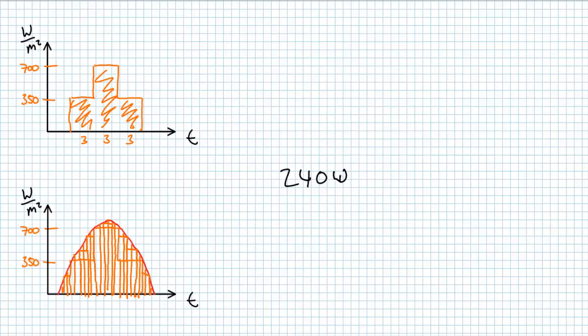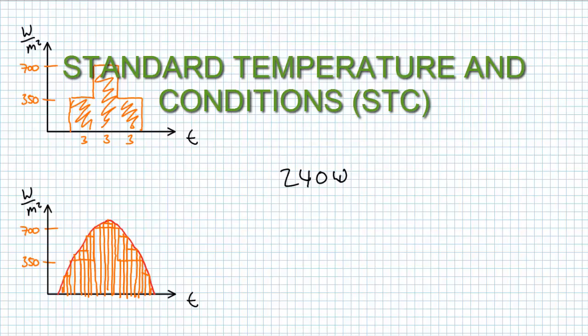There's one catch, though. A 240 watt PV panel produces 240 watts at standard temperature and conditions.